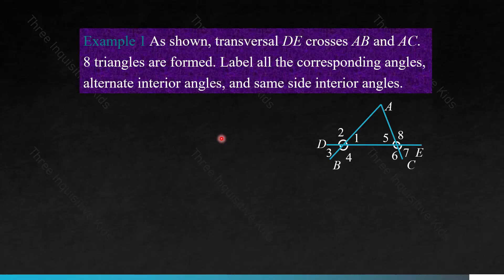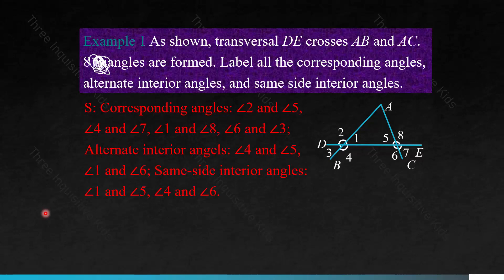Now let's do some problems. As shown, transversal DE crosses AB and CE, and eight angles are formed. Label all the corresponding angles, alternate interior angles, and same-side interior angles. The corresponding angles are: 2 and 5, 4 and 7, 1 and 8, 6 and 3. Alternate interior angles are 4 and 5, and 1 and 6. Same-side interior angles are 1 and 5, and 4 and 6.